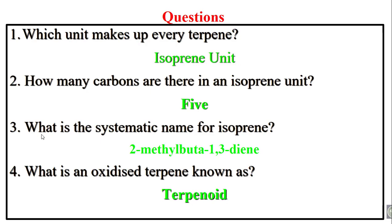What is the systematic name for isoprene? 2-methyl-buta-1,3-diene.